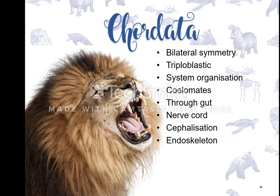Chordata is our last phylum. Very similar to Annelida — bilateral symmetry, triploblastic, coelomate, through gut, cephalization, and also a closed blood system. The only additional thing that makes them chordates is the fact that they have a nerve cord, which is very important for humans and all mammals — a spinal cord protected by vertebrae, making chordates vertebrates instead of invertebrates. That nerve cord is the only differing feature from Annelida.